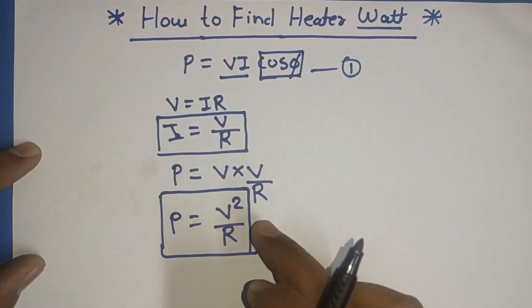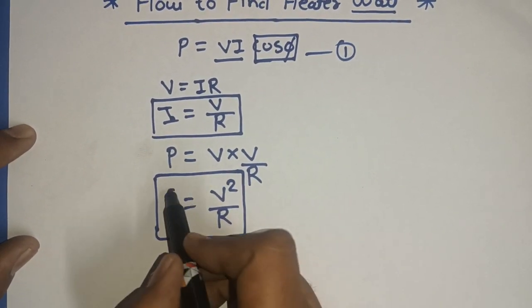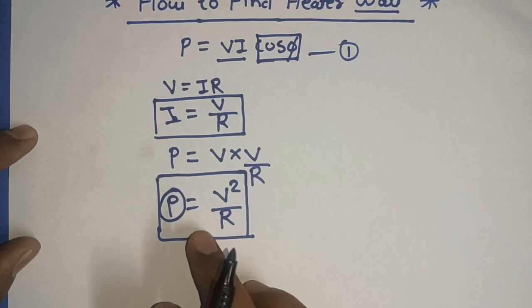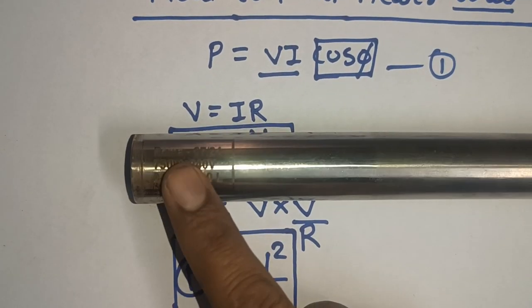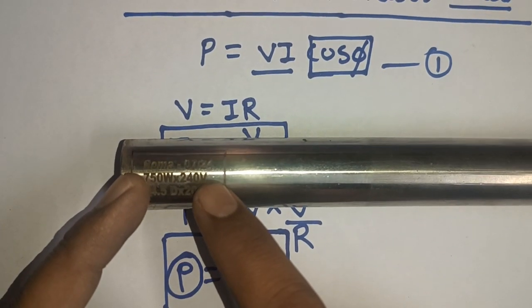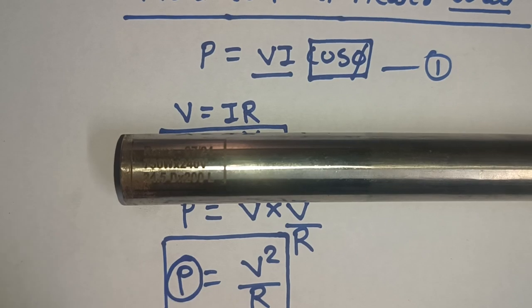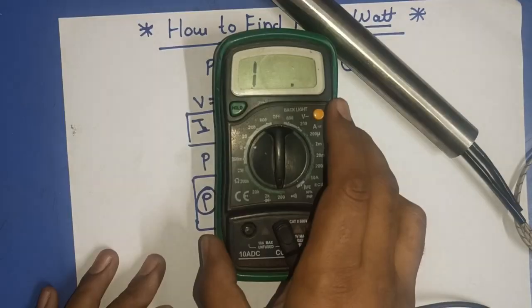So, for calculations of watt of heater, we just required input voltage of heater and resistance of heater. And we can calculate power. You can see we have one heater. Its operating voltage is 240 volt.